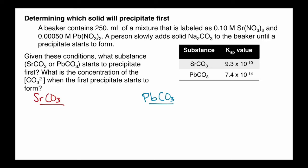In this problem, we're determining which solid will precipitate first. Let's review the problem. A beaker contains 250 milliliters of a mixture that's labeled as 0.1 molar strontium nitrate and 0.00050 molar lead nitrate. A person slowly adds solid sodium carbonate to the beaker until a precipitate starts to form.